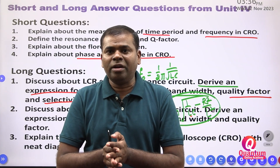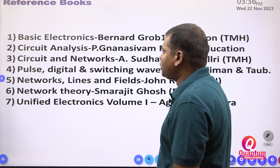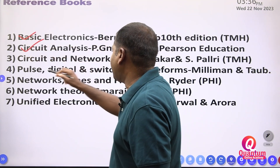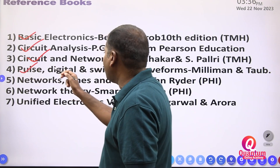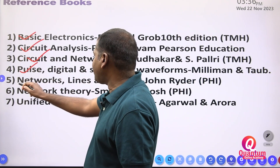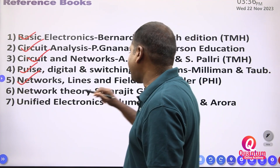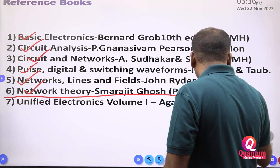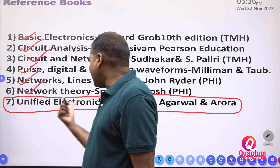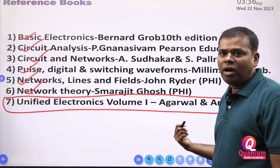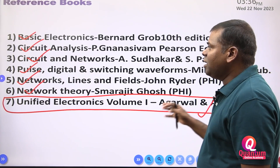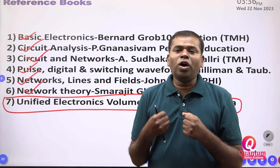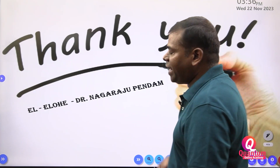For reference books you should refer to: Basic Electronics, Circuit Analysis, Circuit and Network Theories, Pulse and Digital Switching Waveforms, Network Lines and Fields by John Rider, and Network Theory. The recommended textbook is Unified Electronics Volume One by Agarwal and Aurora. Use these to make notes and understand the exam pattern.